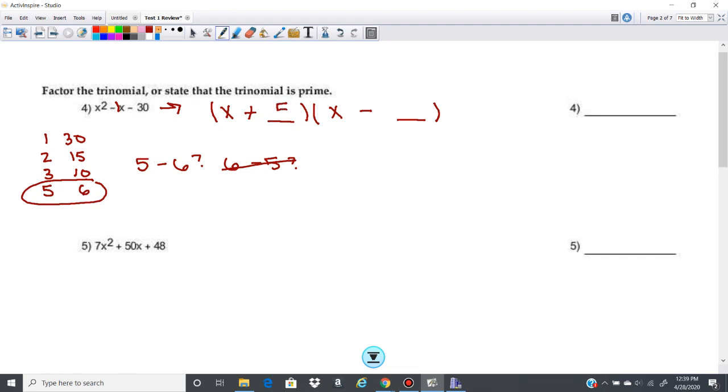So I'm going to put the plus with a 5, and I'm going to put the minus with a 6. And there you go, that's it. So your factors are x plus 5 times x minus 6.